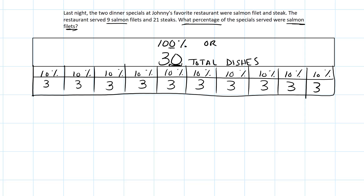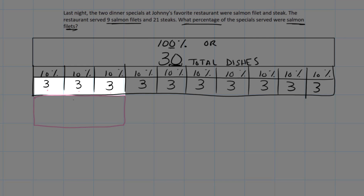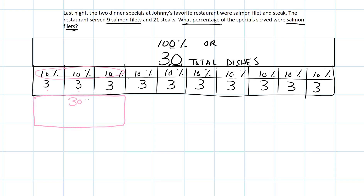The number we have is nine salmon filets. I'll grab pink to represent salmon and jump count by threes: 3, 6, 9. That represents 30%. So 30%, or nine salmon filets, is what we have.